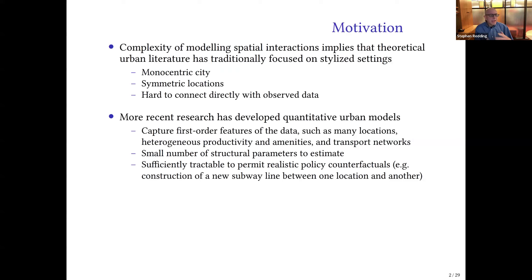Another feature of these models is that they typically have a relatively small number of structural parameters to estimate — unlike the old computable general equilibrium literature where one might have 100 parameters that are very hard to estimate credibly. Because these quantitative models have relatively few parameters, there's some hope of finding exogenous sources of variation to identify those parameters. And although these models connect with real world data, they're still fairly tractable, so one can establish theoretical properties and use them for transparent policy counterfactuals like what will happen if I build a new subway line.